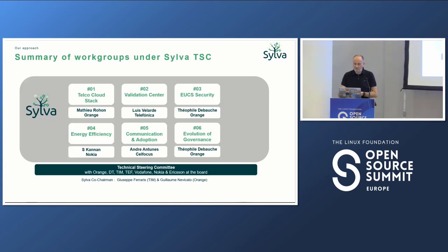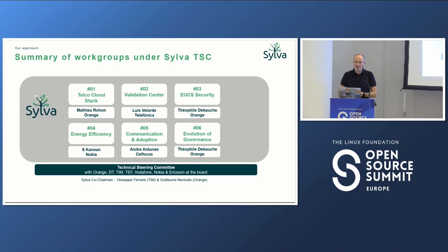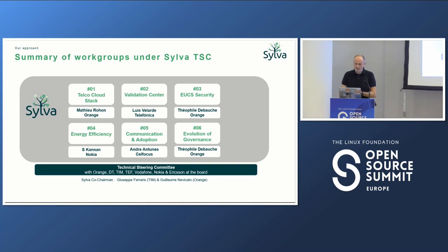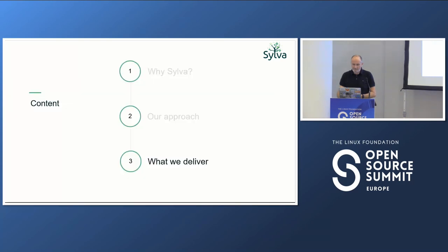Here is how the project has been framed. We have six working groups: the first is dedicated to the technical solution, the second is about the validation center run by Louise, then we have security, energy efficiency, communication and adoption, and of course governance. You may have read today that the project reached a new level of maturity, becoming a directed fund project to really accelerate and speed up the development of SYLVA.